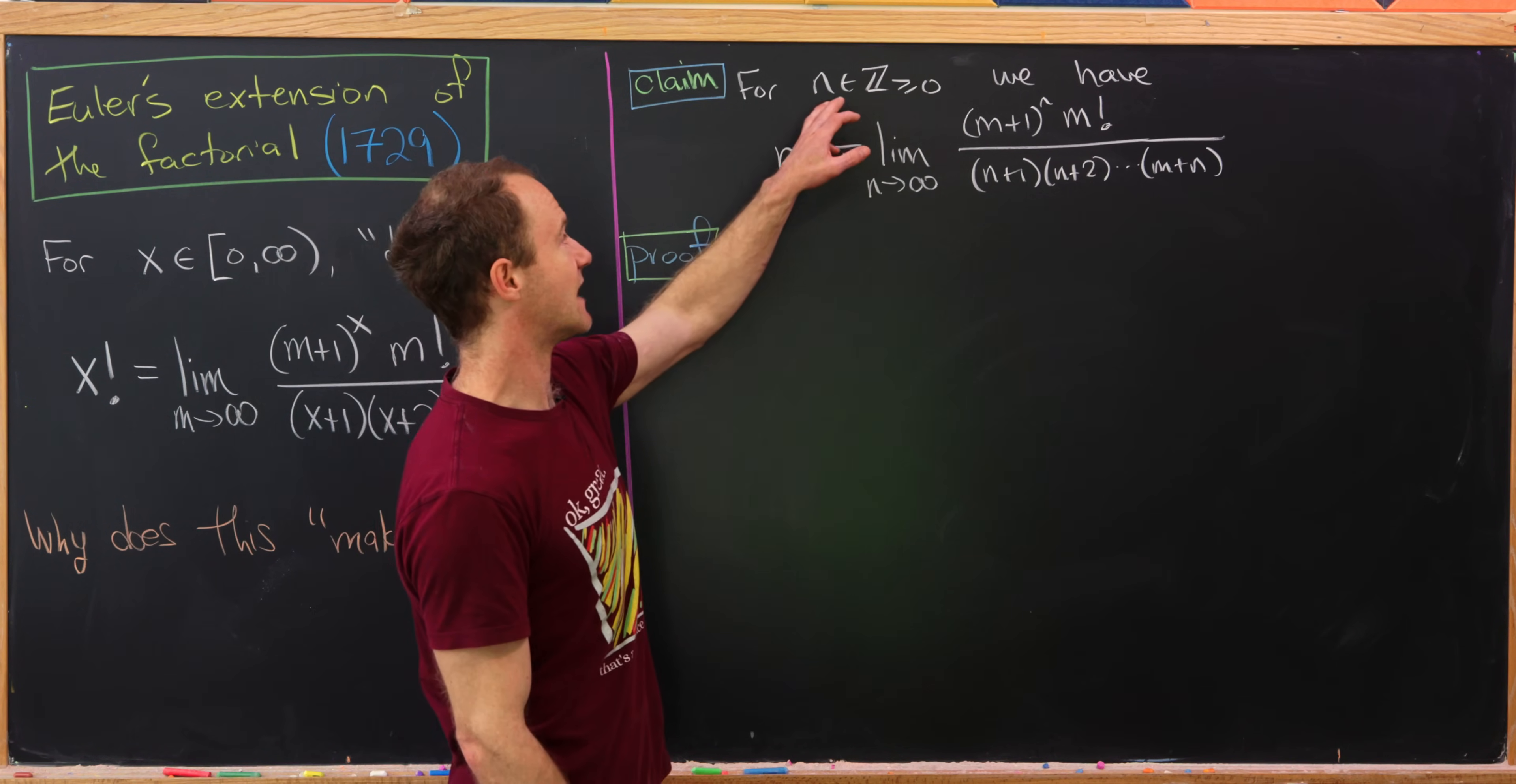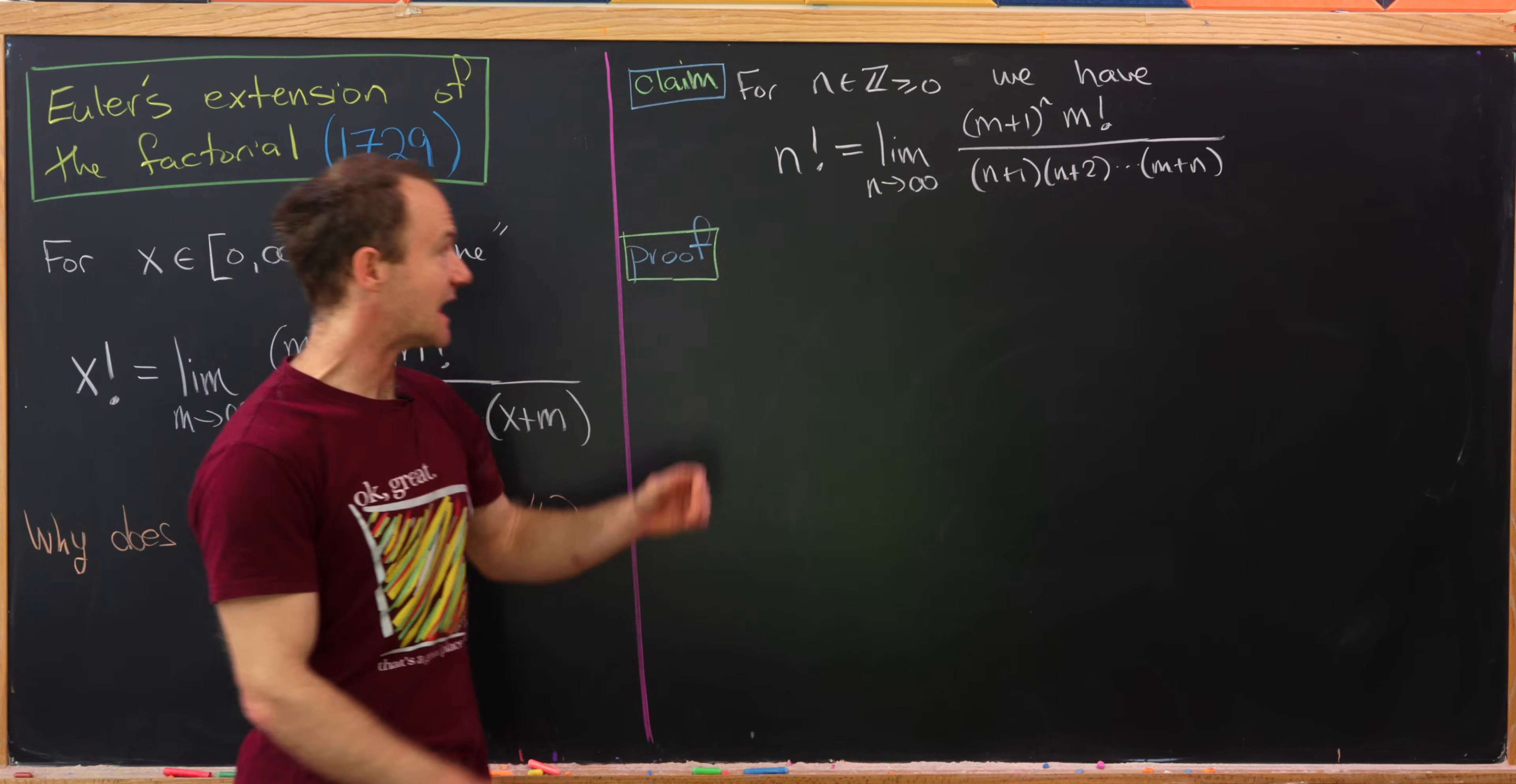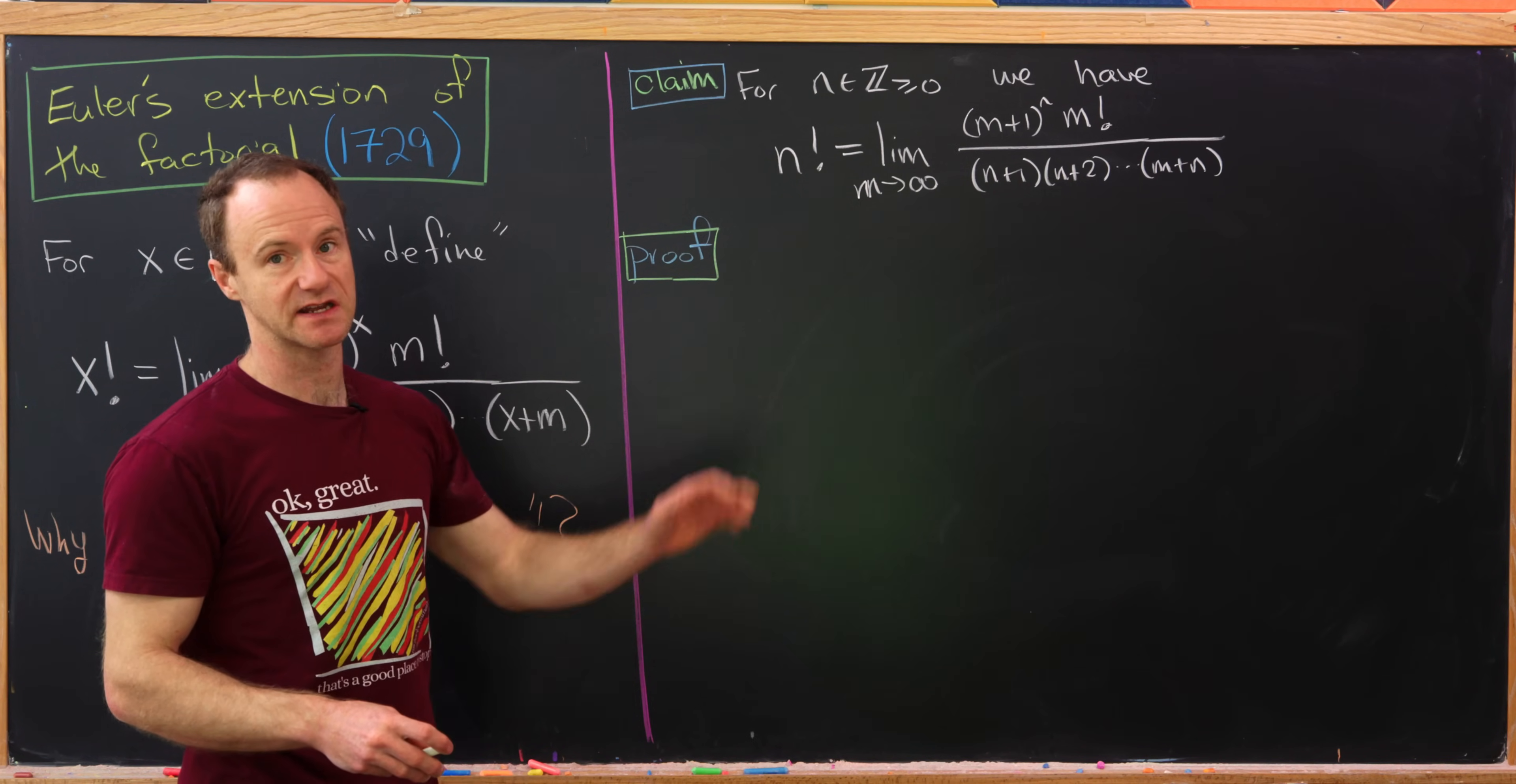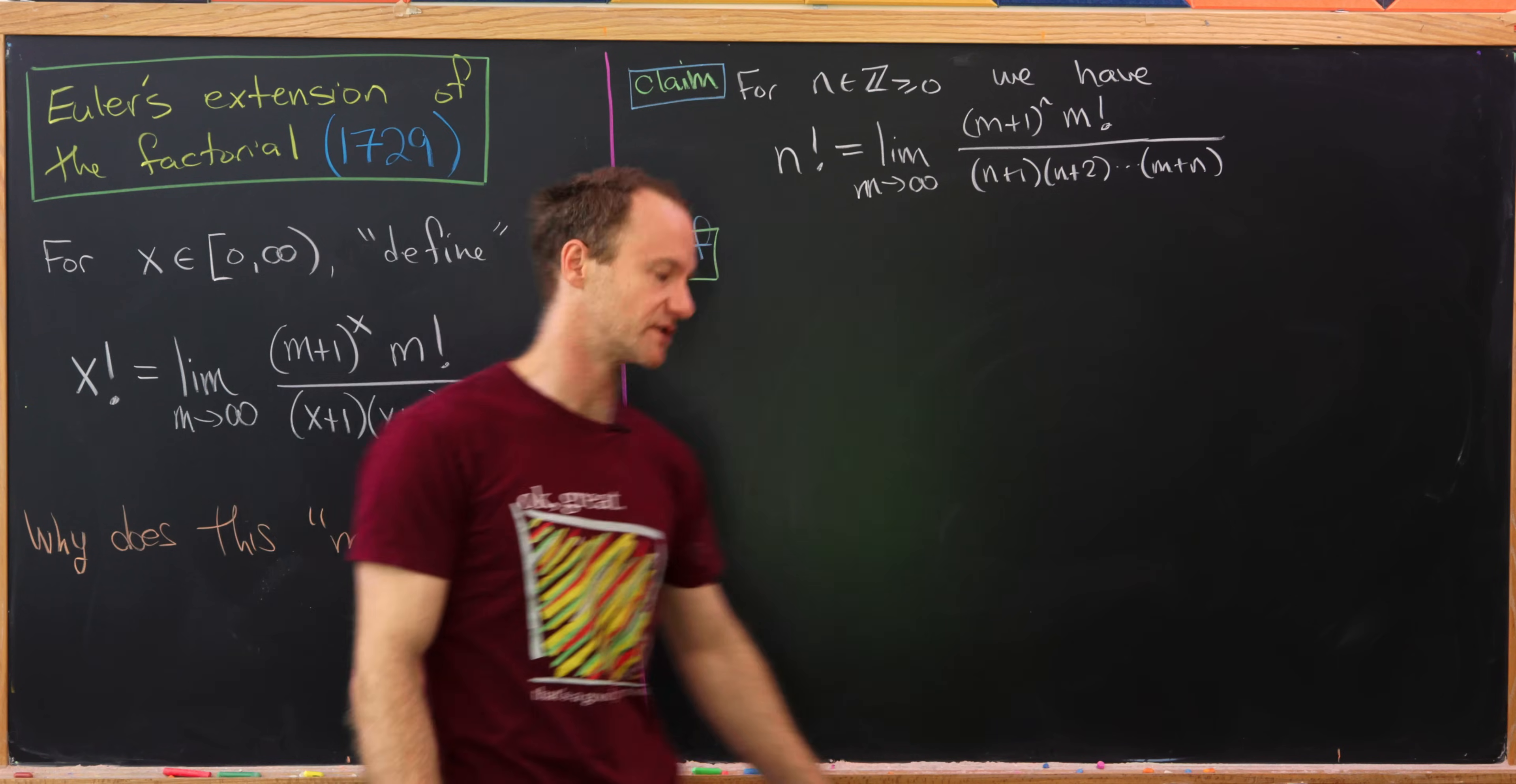be in line with the normal factorial when we have a non-negative integer. In other words, if we have n which is in Z greater than or equal to zero, n factorial as defined the normal way should be equal to this limit as m goes to infinity of (m+1)^n times m factorial over (n+1) rising in multiplication up to (m+n). And this will be the limit that we will prove, thus maybe giving some motivation towards this definition.